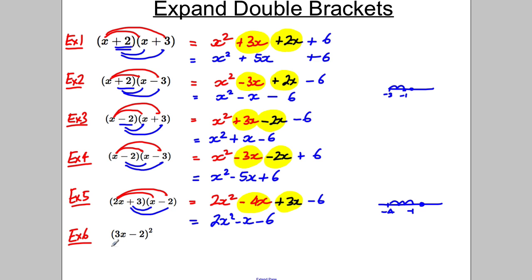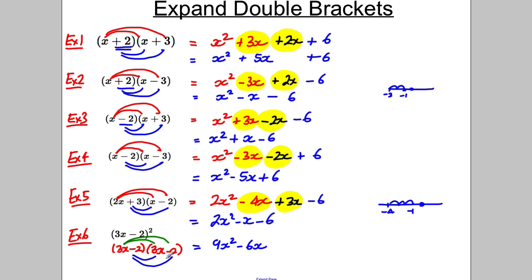The last example: (3x − 2)² means (3x − 2) multiplied by (3x − 2). Once written in that form it's just like example 5. So: 3x × 3x = 9x², 3x × negative 2 = negative 6x, negative 2 × 3x = another negative 6x, and negative 2 × negative 2 = positive 4. Combining the middle terms: negative 6x and negative 6x gives negative 12x, so the result is 9x² − 12x + 4. That's enough for your revision card — now try the following exam questions on the back.